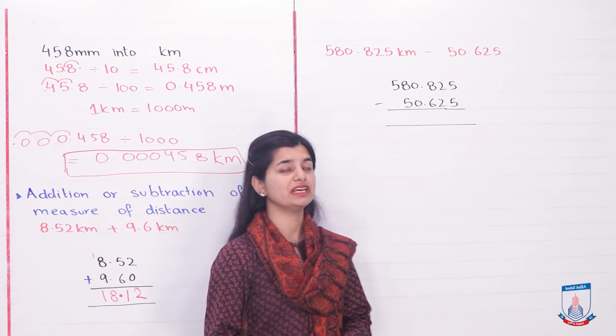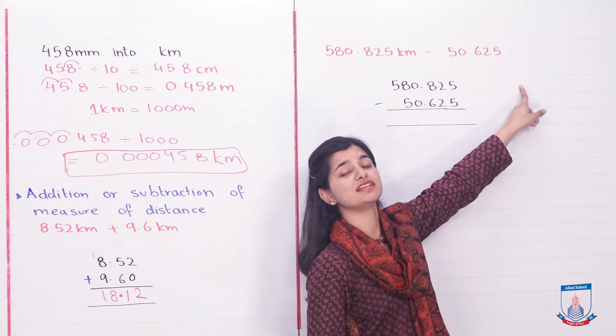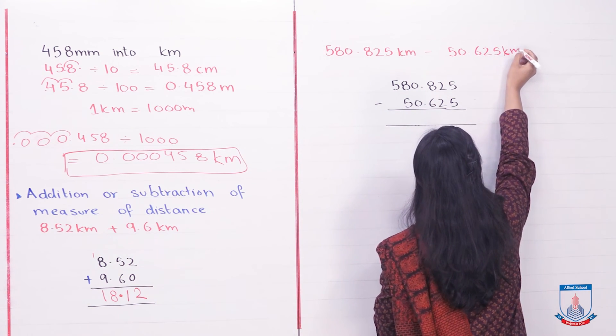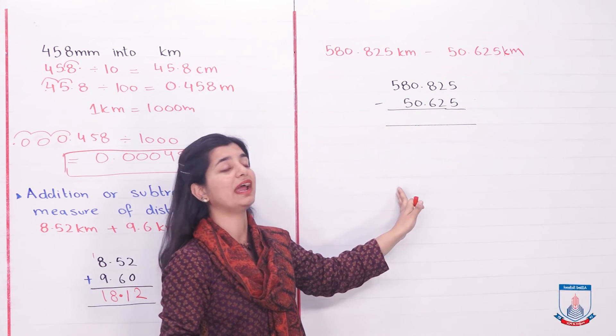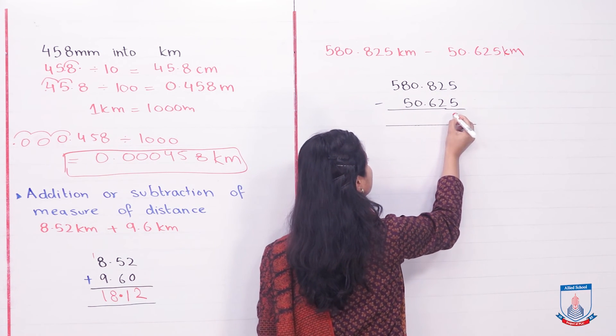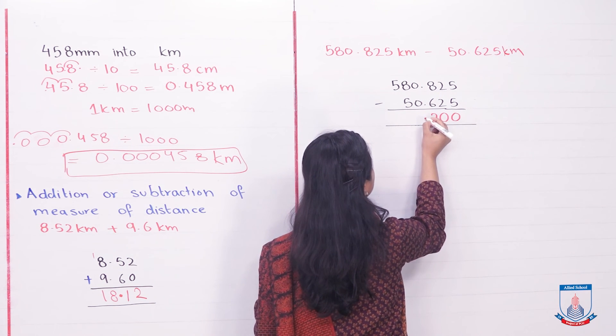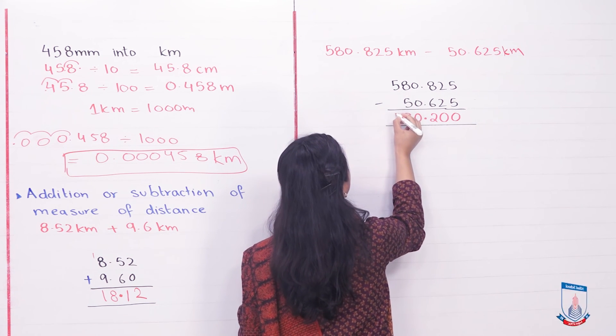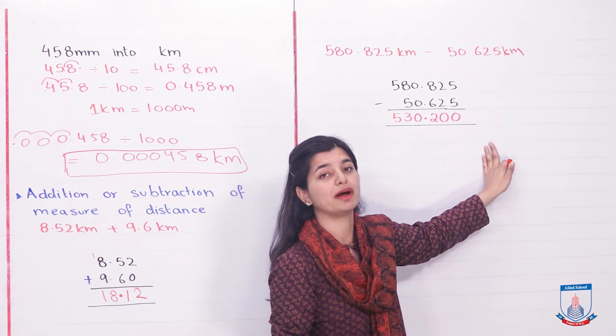Let's see one more subtraction example. We need to subtract 50.625 kilometers from 580.825 kilometers. What we need to do is place them exactly aligned with decimals properly matched. 5 minus 2 is 3, 2 minus 5 we need to borrow so it becomes 2, decimal in its place, 0 minus 0 is 0, 8 minus 5 is 3, 5 minus 0 is 5. So 530.200 is our answer for subtracting.